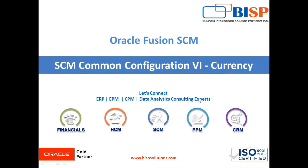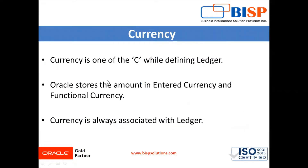Currency is one of the C's while defining a ledger in our Oracle Fusion application. In the upcoming videos we will see how many types of C's are there in Oracle Fusion Supply Chain Management application. Each ledger has a functional currency which is the primary reporting currency for a group of organizations.